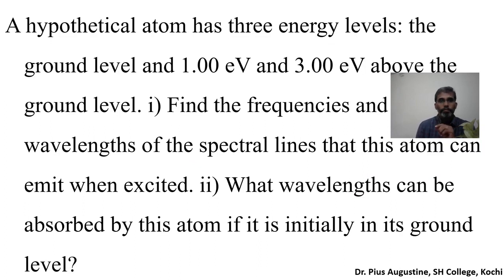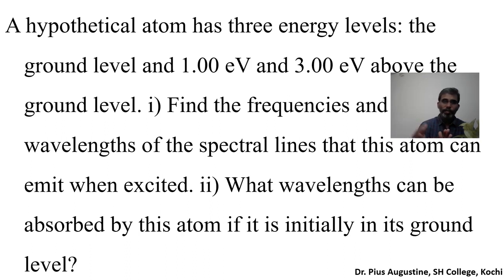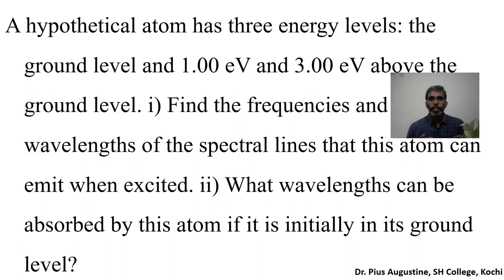Now we will solve a few questions. First question: a hypothetical atom has three energy levels — the ground level, a level 1.00 eV above the ground level, and another level 3.00 eV above the ground level. Find the frequencies and wavelengths of the spectral lines that this atom can emit when excited. Second question: what are the wavelengths that can be absorbed by this atom if it is initially in the ground level? Calculate E₂ − E₁ divided by h for emission, and that same energy gap corresponds to absorption wavelengths.